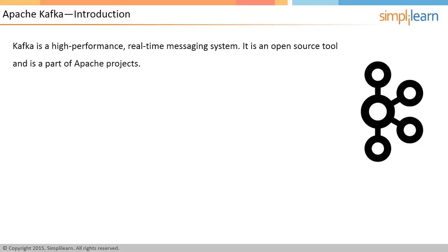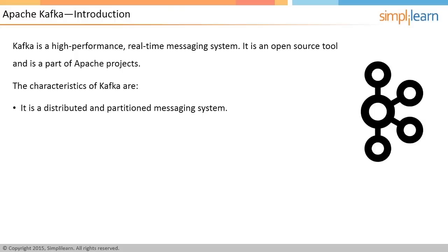Kafka is a high-performance real-time messaging system. It is an open-source tool and is a part of Apache projects. Kafka is a distributed and partitioned messaging system that is highly fault-tolerant and scalable.